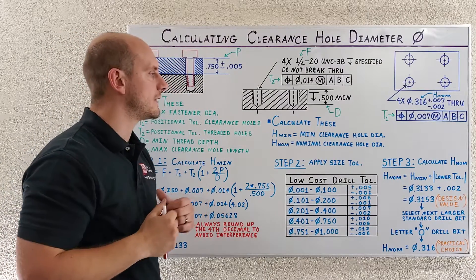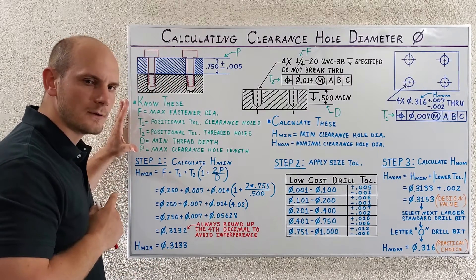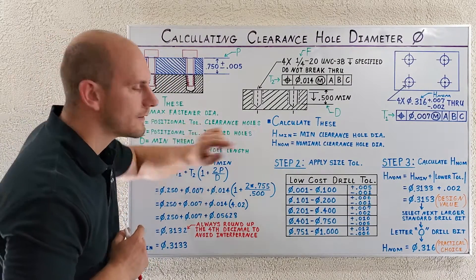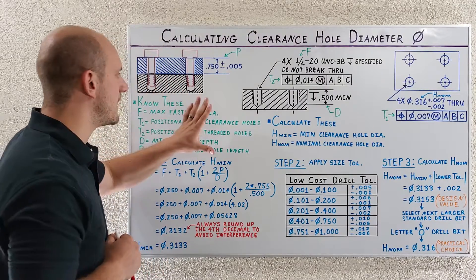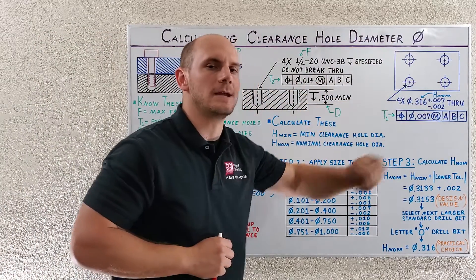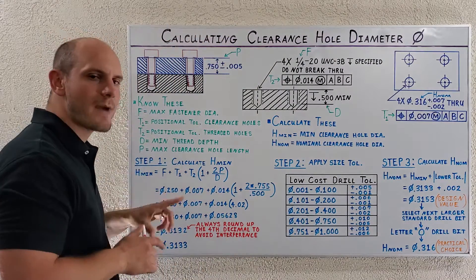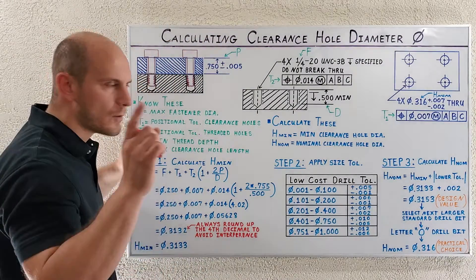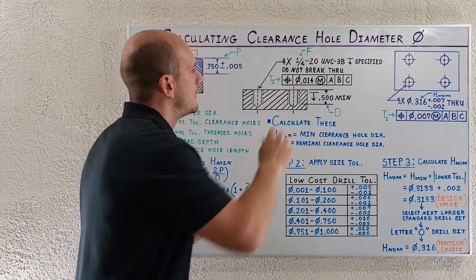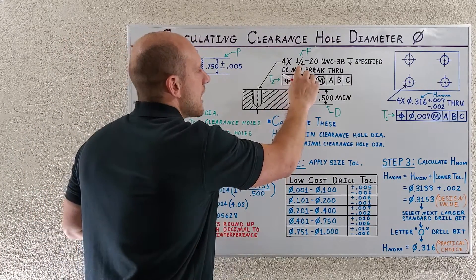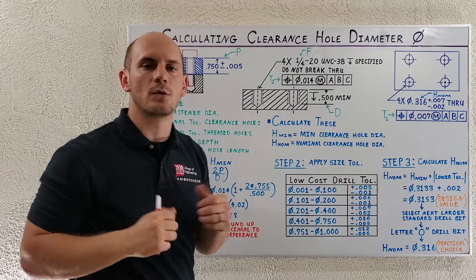To begin calculating our clearance hole diameters we need to know five values, and we can harvest these from our mechanical design data. The first one is F — our max fastener diameter — which we get from our threaded hole call-out. This is our nominal thread size; in this case it's a quarter inch, so we use 0.250.